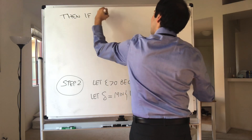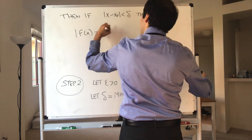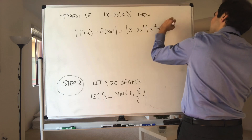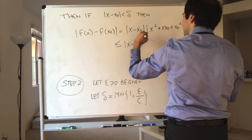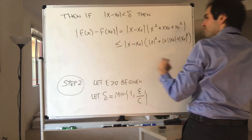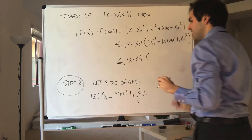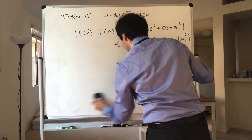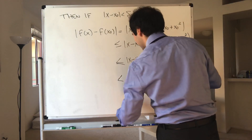Then, if x minus x naught is less than delta, let's calculate f of x minus f of x naught. We found that it's x minus x naught times x squared plus x·x naught plus x naught squared. By the triangle inequality, this is less than or equal to x minus x naught times absolute value of x squared, plus absolute value of that, plus absolute value of that. And by our assumption, this is less than or equal to x minus x naught times c. But x minus x naught is less than delta, which is less than epsilon over c. So you're left with less than epsilon over c times c — and the c's cancel out — giving epsilon. So this satisfies epsilon, and therefore f is continuous at x naught.